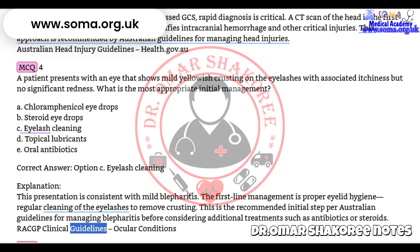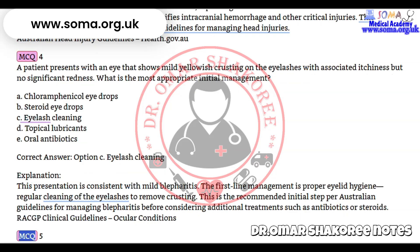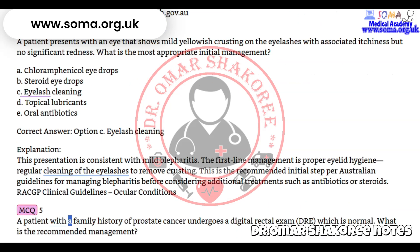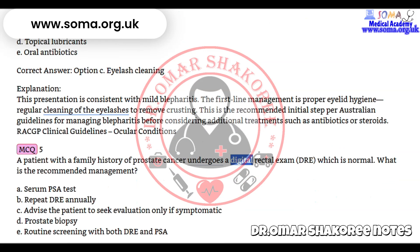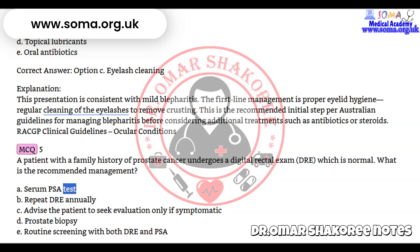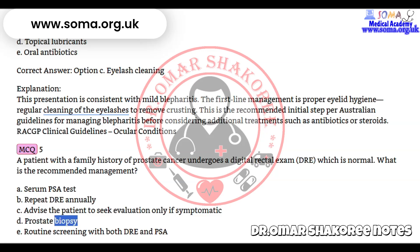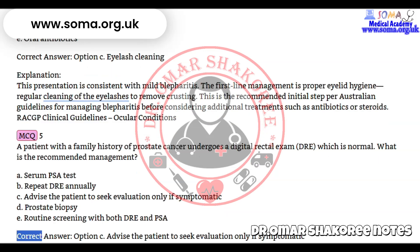RACGP clinical guidelines — ocular conditions. Question 5: A patient with a family history of prostate cancer undergoes a digital rectal exam (DRE), which is normal. What is the recommended management? A) Serum PSA test, B) Repeat DRE annually, C) Advise the patient to seek evaluation only if symptomatic, D) Prostate biopsy, E) Routine screening with both DRE and PSA.